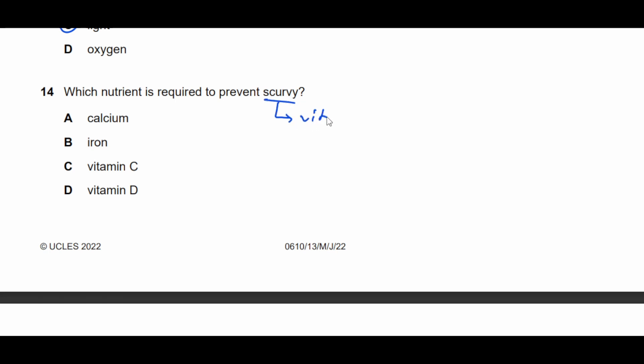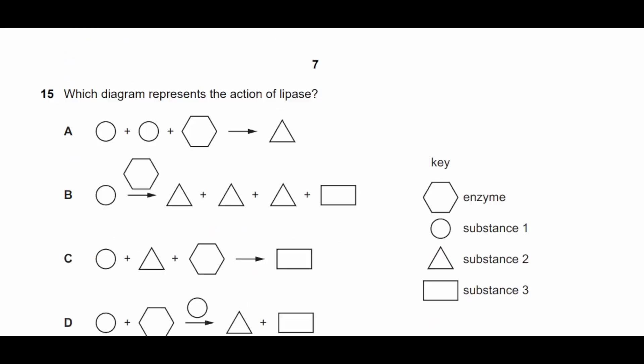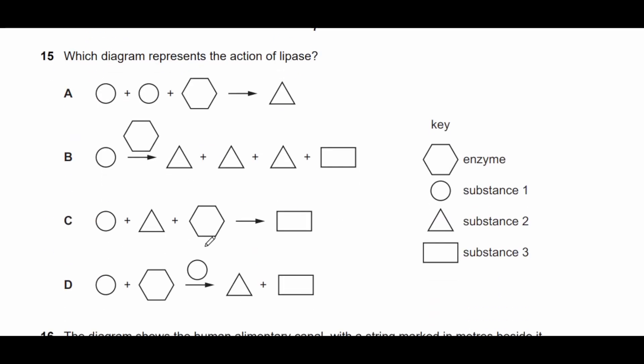Question fourteen: which nutrient is required to prevent scurvy? Scurvy is a deficiency of vitamin C, therefore the answer is C.